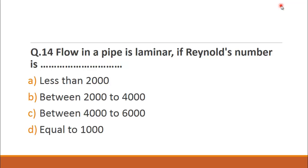MCQ number 14 is: Flow in a pipe is laminar if Reynolds number is? The choices are A. less than 2000, B. between 2000 and 4000, C. between 4000 and 6000 and D. equal to 1000. We know that the flow is laminar when the Reynolds number is less than 2000, it is in transition state when the Reynolds number is between 2000 to 4000, and it is turbulent flow when the Reynolds number is higher than 4000. So the right choice for this question is A. less than 2000.